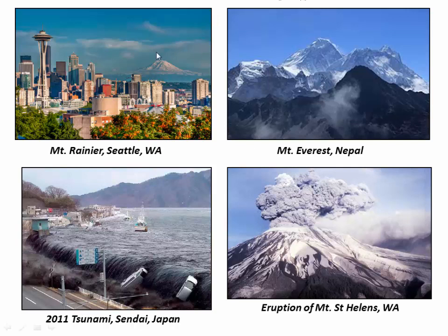Plate tectonics is why we have volcanoes like Mount Rainier. It's why we have huge mountain ranges like the Himalaya. And unfortunately plate tectonics is also why we have big earthquakes and tsunamis and volcanic eruptions and things that actually threaten human health and infrastructure every day. So plate tectonics is really the root system that controls almost everything that happens on Earth's surface, at least everything geological.